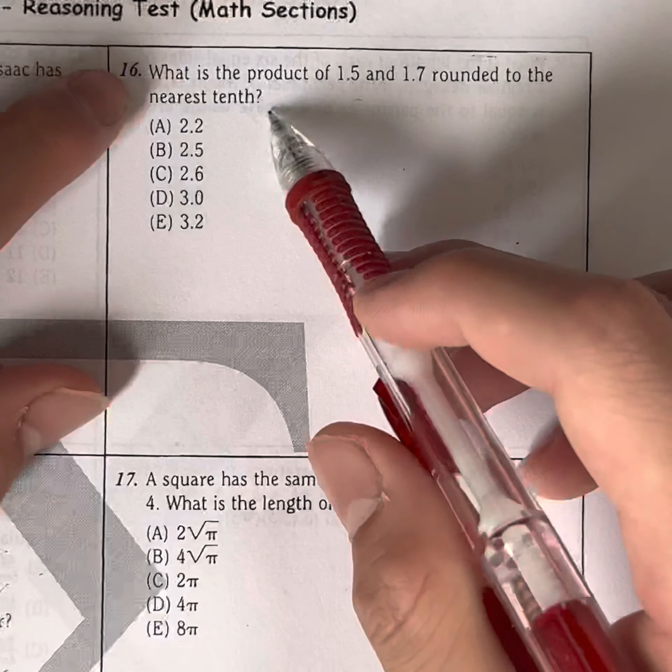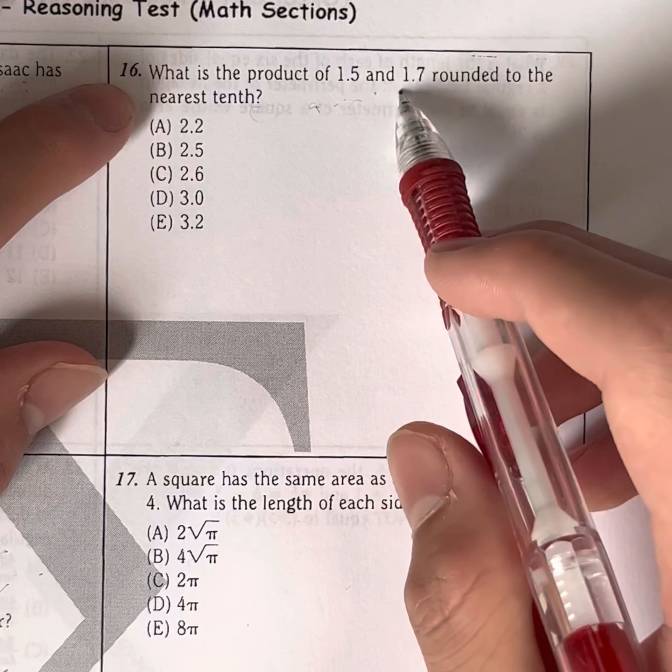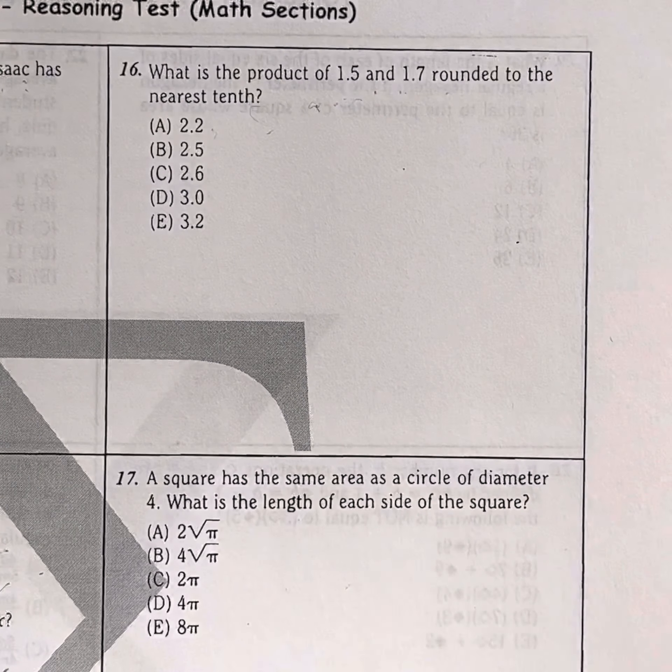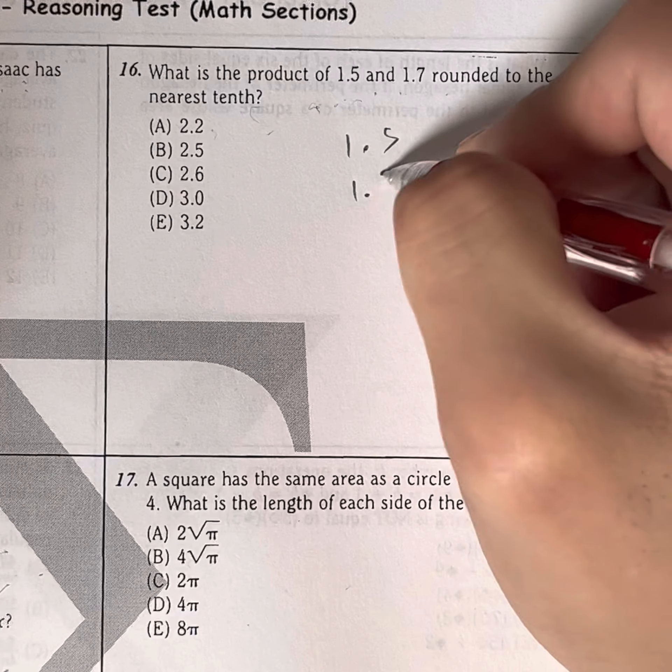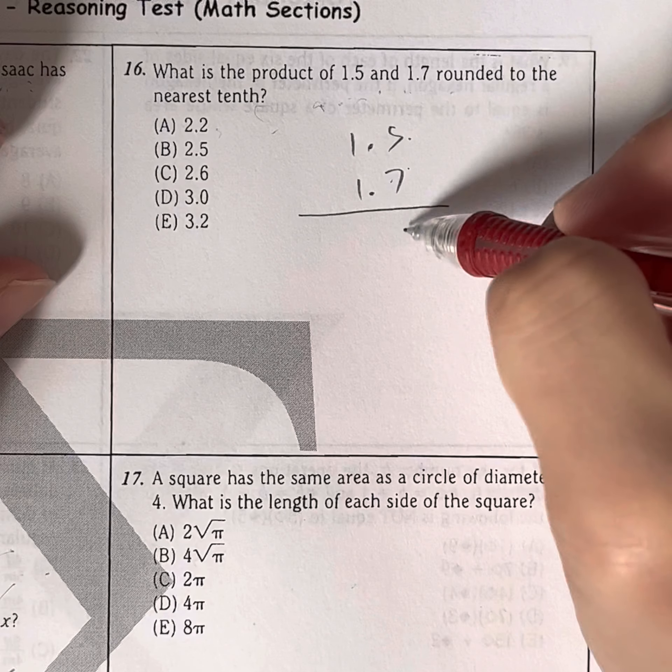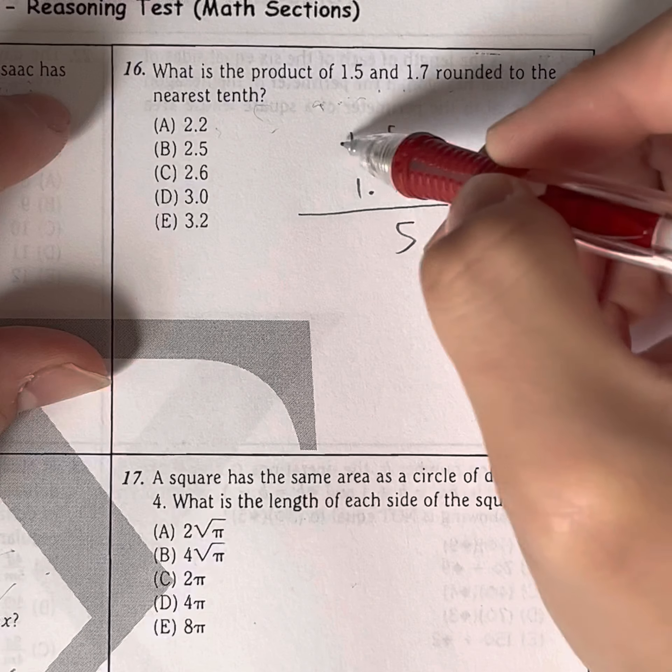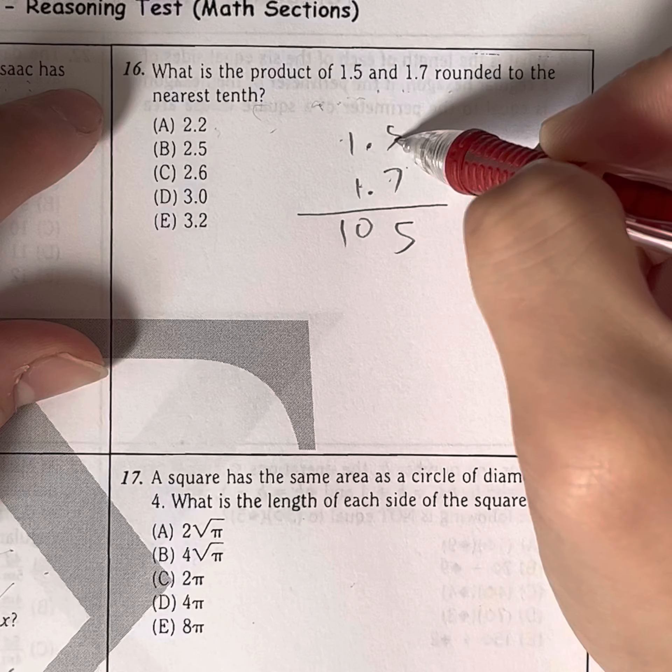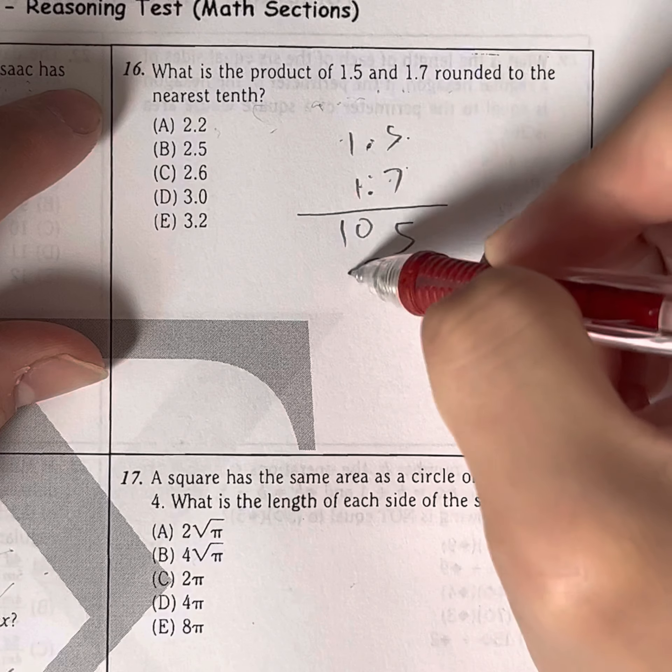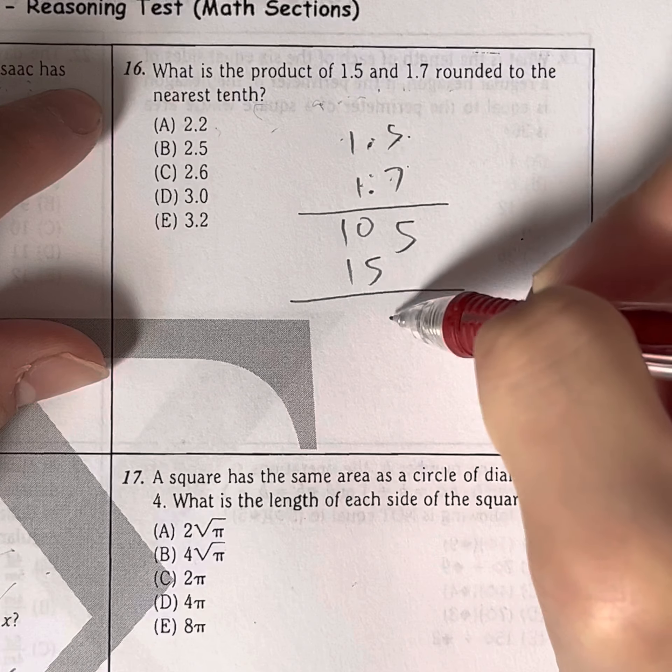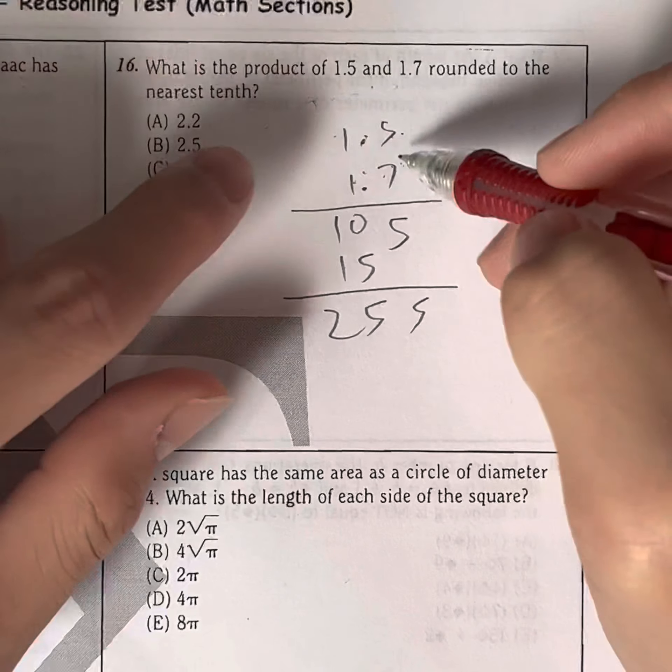Question 16. What is the product of 1.5 and 1.7 rounded to the nearest tenth? So let's just multiply them out. This one isn't too difficult. It just takes a little bit of time. 5 times 7 is 35, carry the 3. 7 times 1, 10. 1 times 5 is 5, 1 times 1 is 1. Add them up. 5, 5, 2. There are two decimal points, right? 1, 2. So we move two decimal points. 1, 2, giving us 2.55.